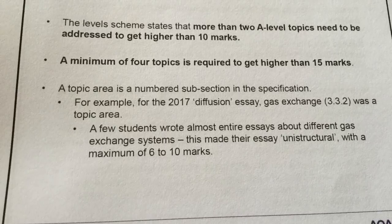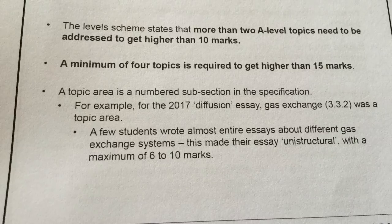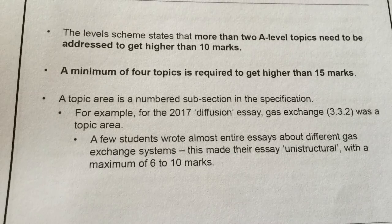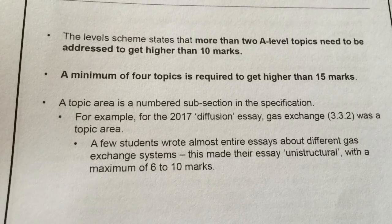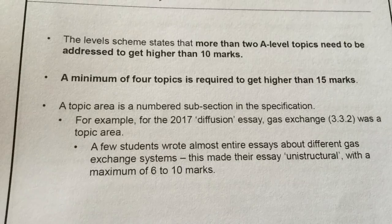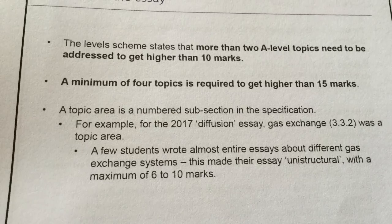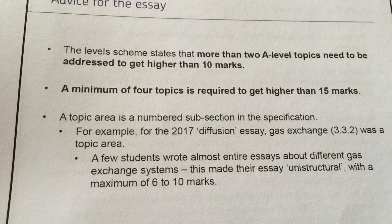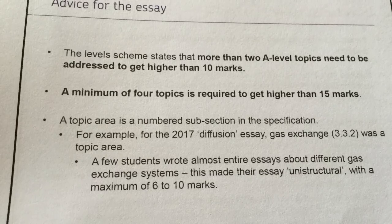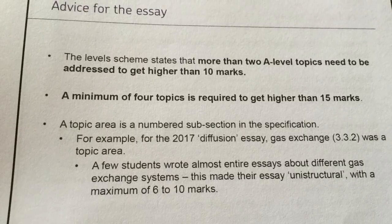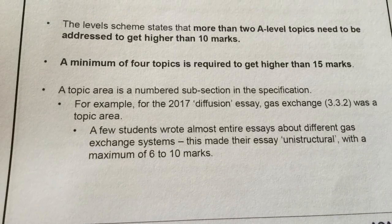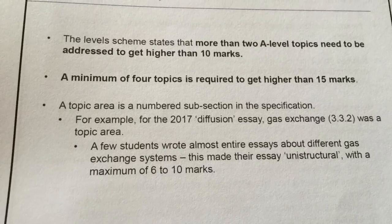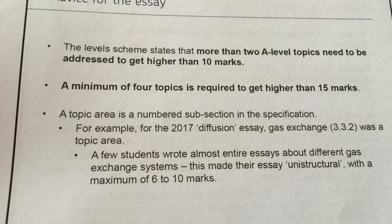AQA has stated that to get 10 marks or more you need to include more than two topic areas of the syllabus, and to get more than 15 marks you need more than four topic areas. However, it's easy to fall into the trap of writing all about one particular area. In last year's diffusion essay, many students just wrote about gas exchange — whether about fish or lungs — but it was all contained within subsection 3.3.2. The essay we've just analysed did jump from subsection to subsection: from light at 3.6.4 to taxis and kinesis at 3.6.1 and synaptic transmission at 3.6.2. To avoid two paragraphs within the same subsection, try to be truly synoptic in your approach and jump across different areas of the specification.